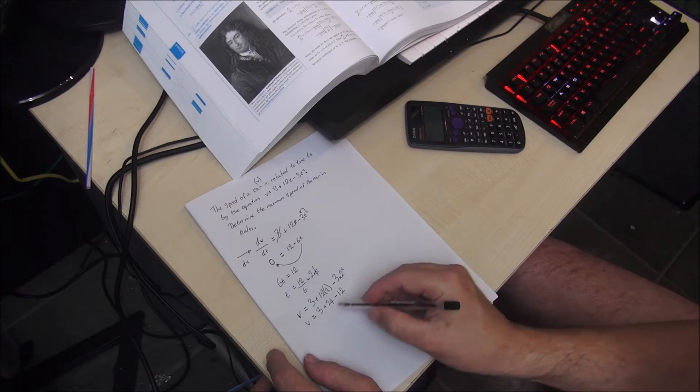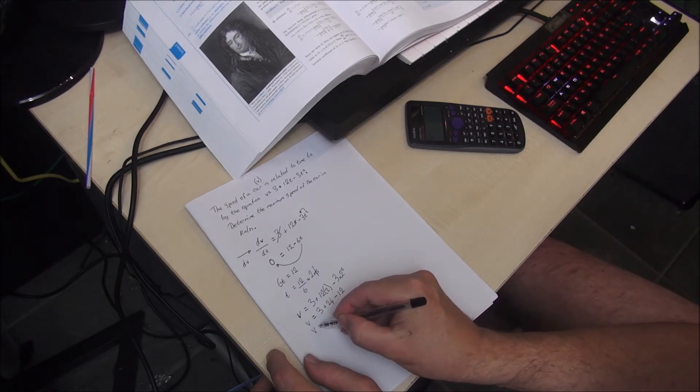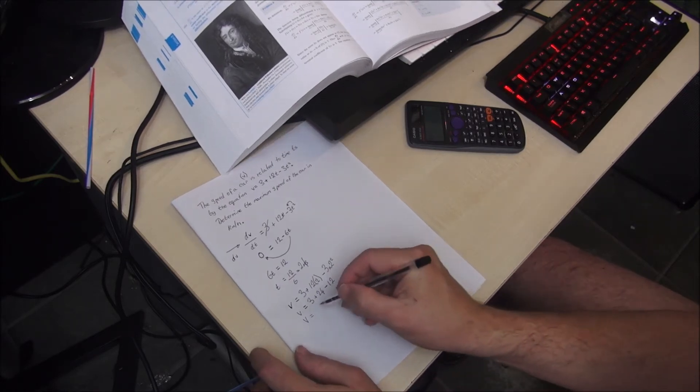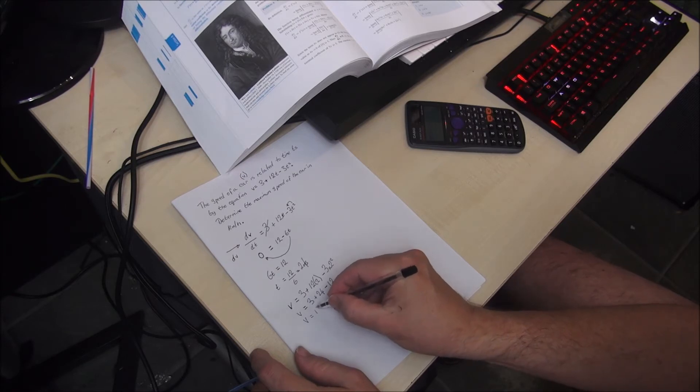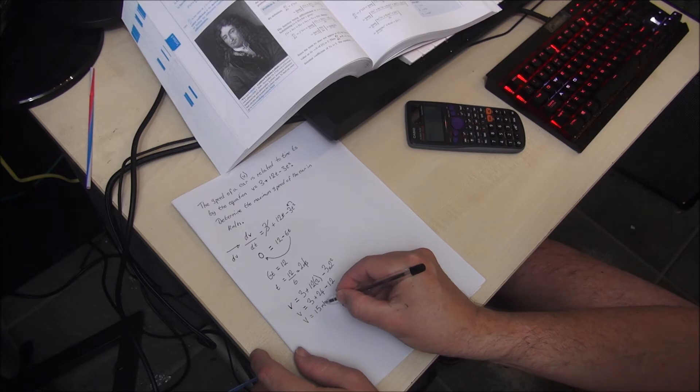And when you do that sum, v is equal to, and I run out of room here, v is equal to 15 metres per second.